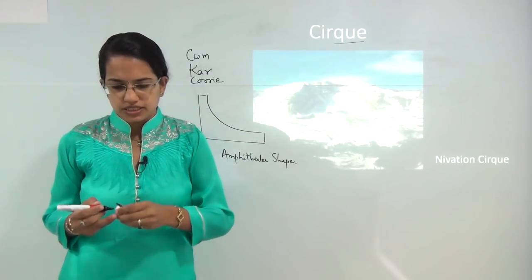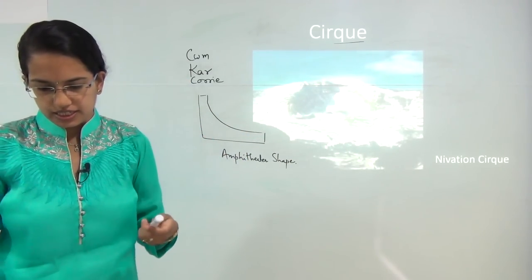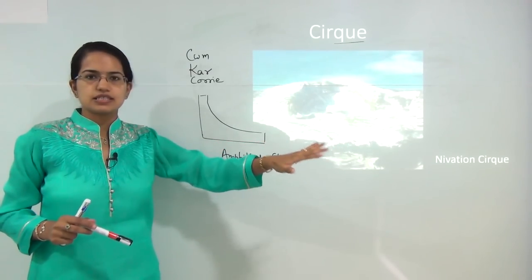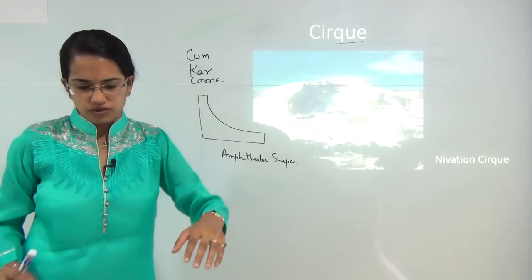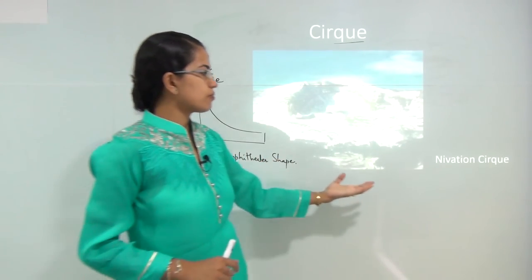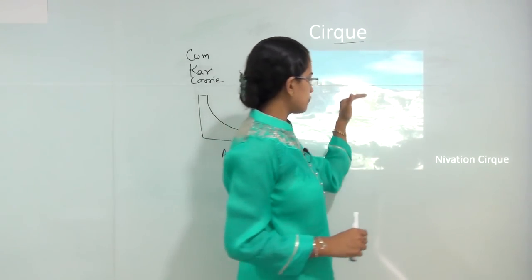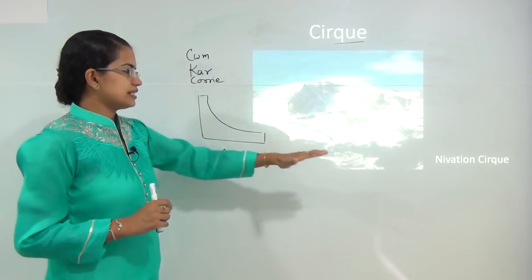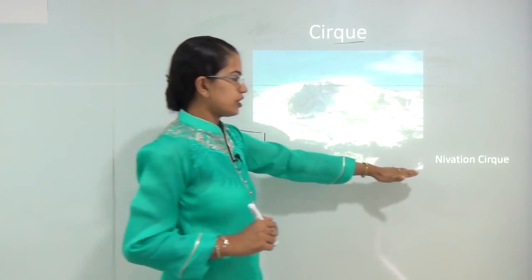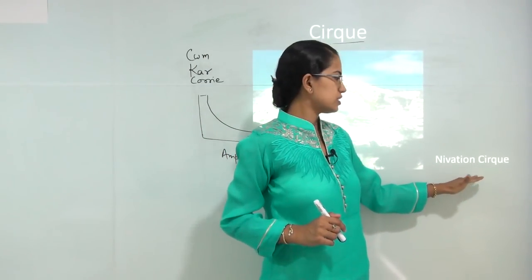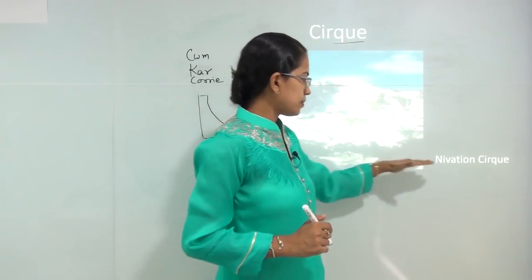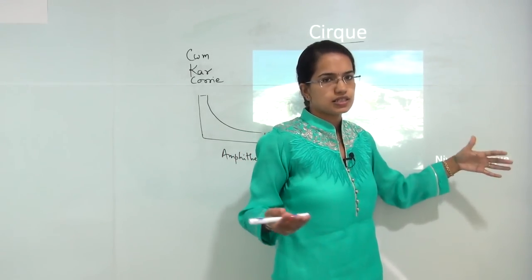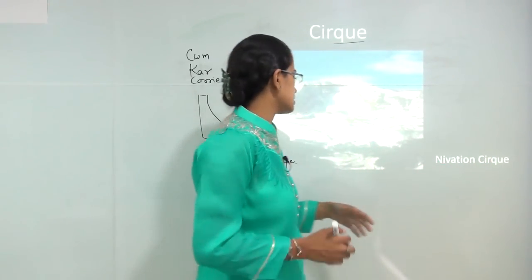Névation cirque is a type of cirque. It has no basins, no moraine deposits, and it is formed mainly by the frontal moulds that move on. By the process of névation, if the cirque formation takes place, in simple terms it is called a névation cirque.